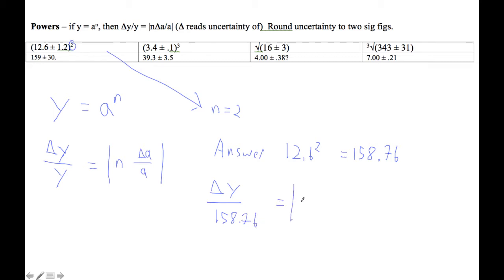That equals the absolute value of n, so n is 2, so twice this ratio here, which is 1.2 over 12.6.